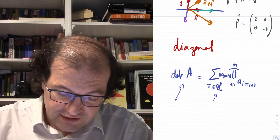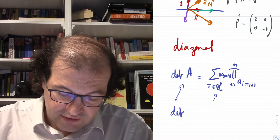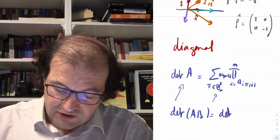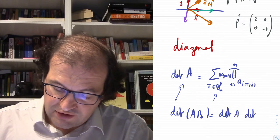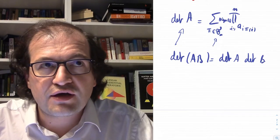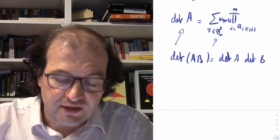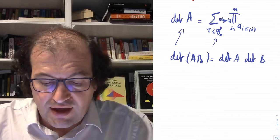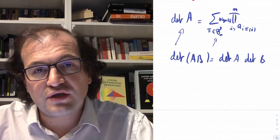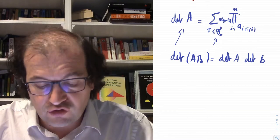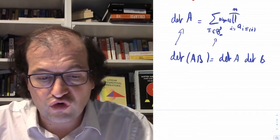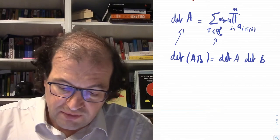The determinant has the property that det(AB) = det(A)·det(B). If we express our application in the basis of its eigenvectors, it becomes diagonal, and we can compute the determinant very easily. Let me first write down the definitions.